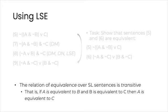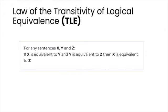However, although this belongs to common sense, we still haven't explicitly incorporated it into our logical system. So let's introduce a new law. The law of the transitivity of logical equivalence, or TLE for short. This says that for any sentences x, y, and z, if x is equivalent to y, and y is equivalent to z, then x is equivalent to z. There is also a proof of this, which I'll also mention on the course site, but again, I won't go through it here.